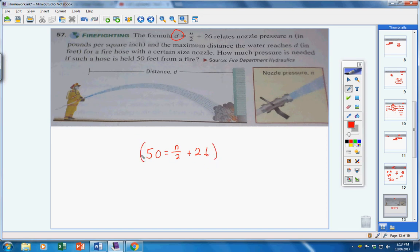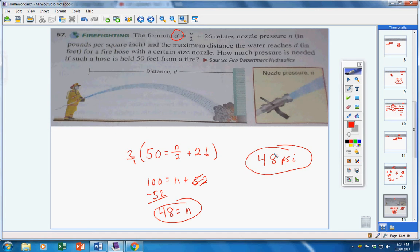Multiply everything by 2 to eliminate your fractions. 2 times 50 is 100. 2 over 1 times N over 2. Your 2s cancel, leaving you with N. 2 times 26 is 52. Bring the 52 over. Make it a negative 52. And we have 48 equals N. Your N is pressure in pounds per square inch, or PSI. So, your answer would be 48 PSI. That's how much pressure you need on the water for it to reach 50 feet.